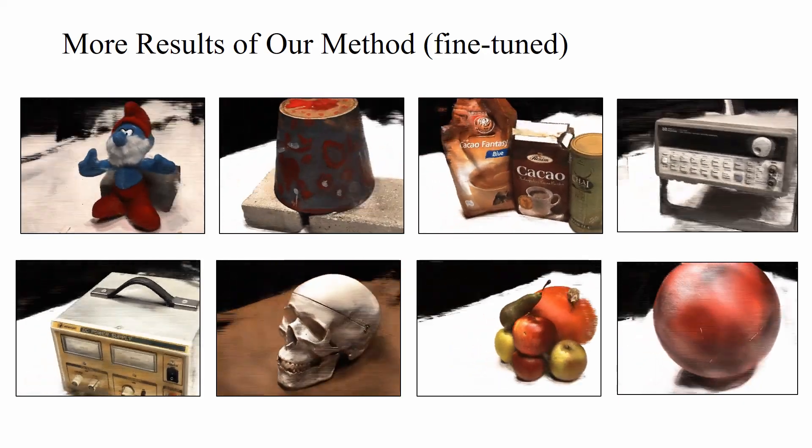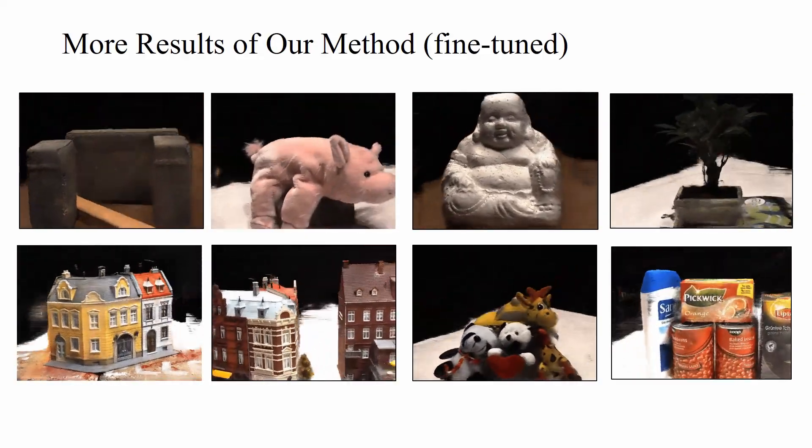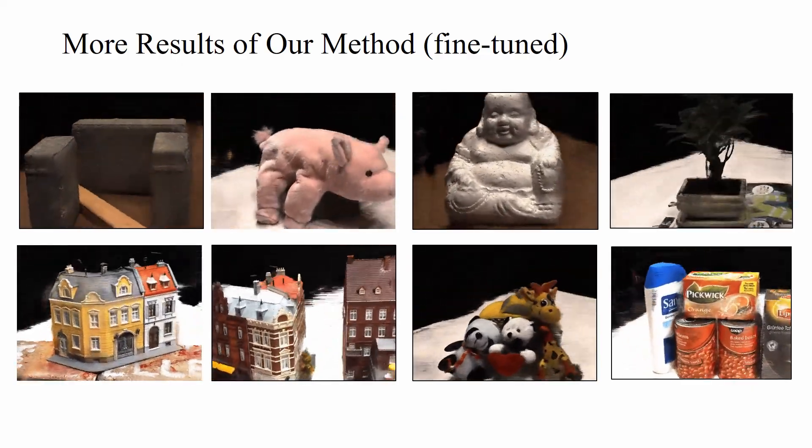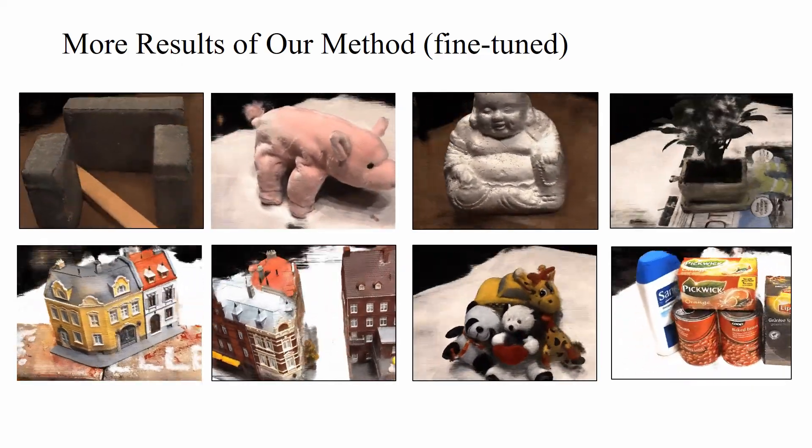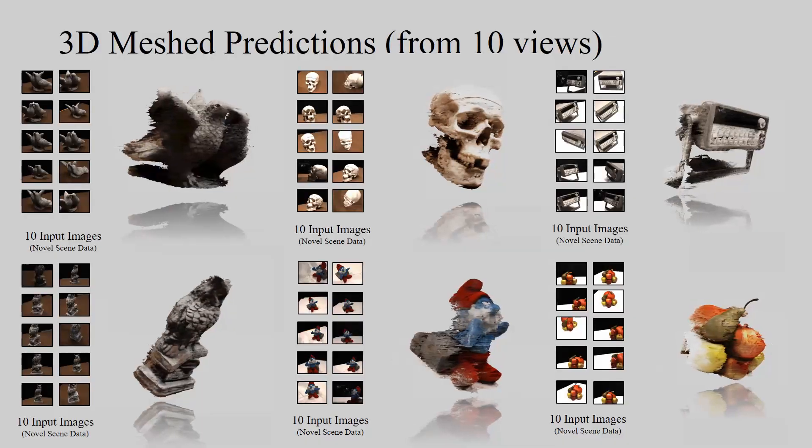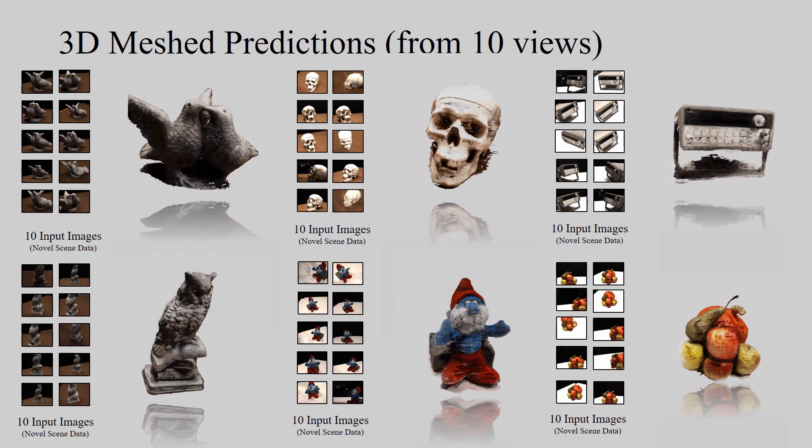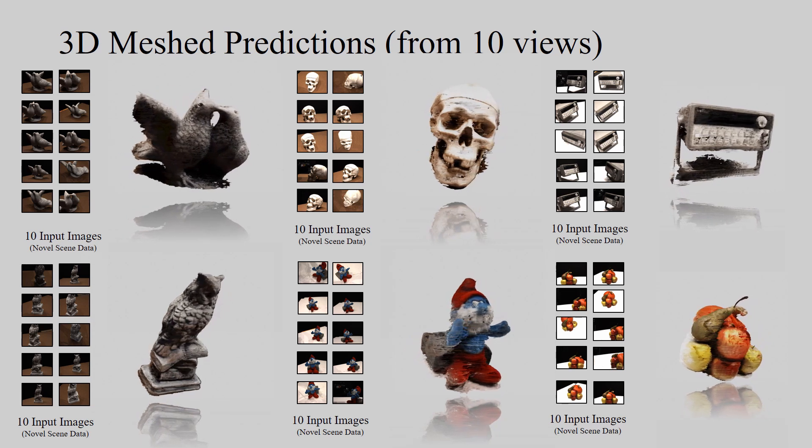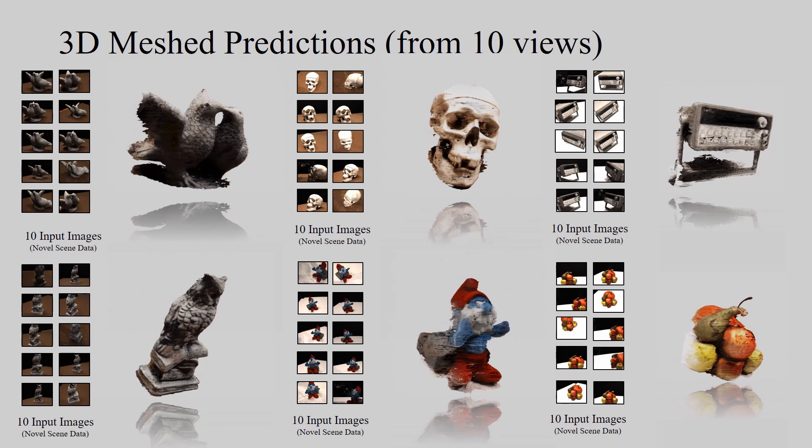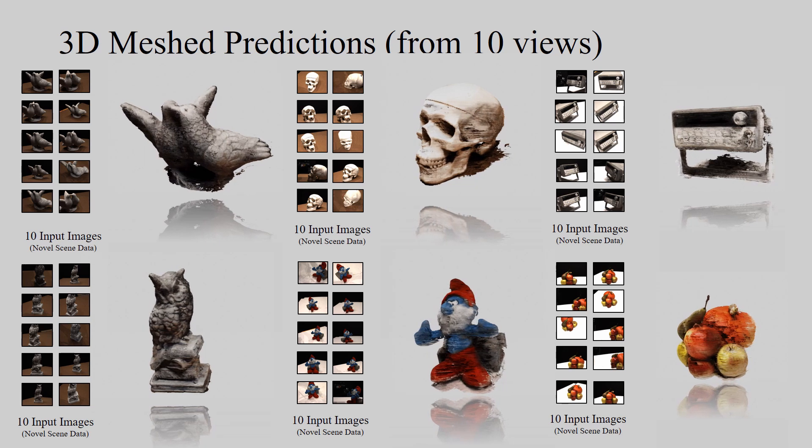For example, our model allows for colored 3D meshing based only on 10 input views. Note, our Stereo Radiance Field was trained only on images and no 3D data was given to the network. 3D reconstruction from sparse views of novel scenes was learned in an unsupervised manner, based only on the rendering loss.